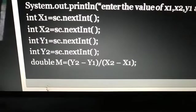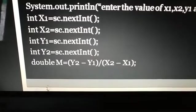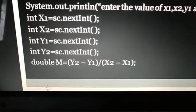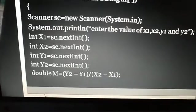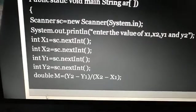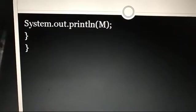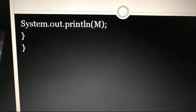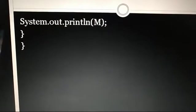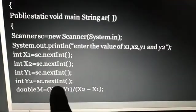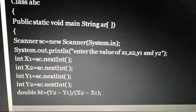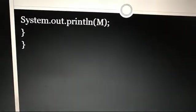After the calculation we need to display, so I'm displaying System.out.println(M), because all the value is stored in M. So this M we need to print. Thereafter two closing brackets - you can see one closing for the main function and one for the class.